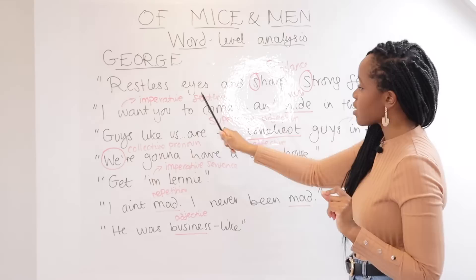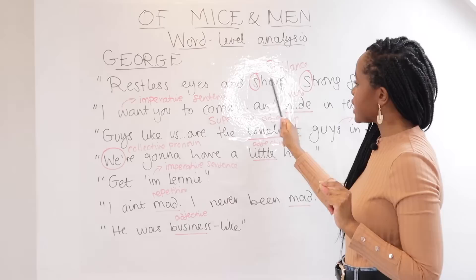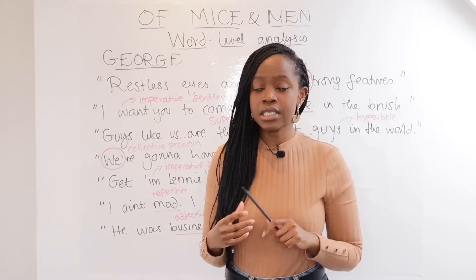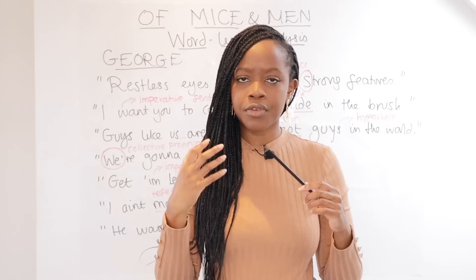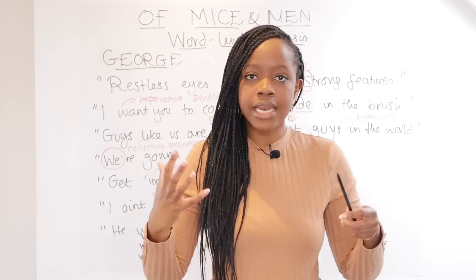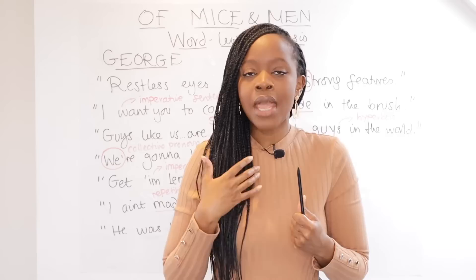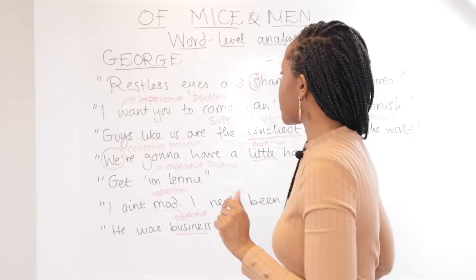The first quotation for George's character is the description Steinbeck gives him: he has 'restless eyes and sharp, strong features.' The word-level analysis here is to point out the sibilance — the 's' sounds in 'sharp' and 'strong.' This sibilance portrays George as very shrewd, cunning, always thinking and calculating, almost like a fox. This stands in stark contrast to Lenny, who is big and bear-like — physically powerful but not as sharp-witted or intelligent as George.